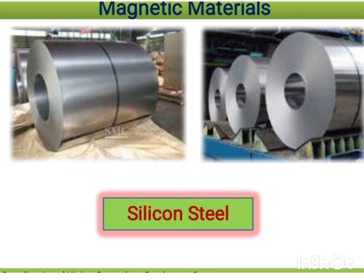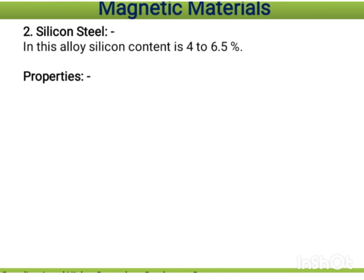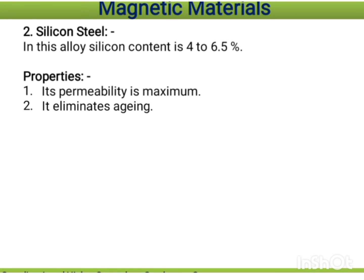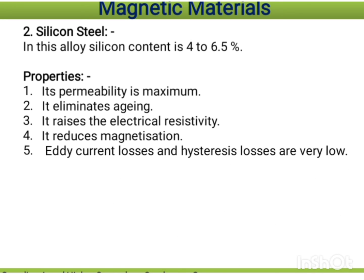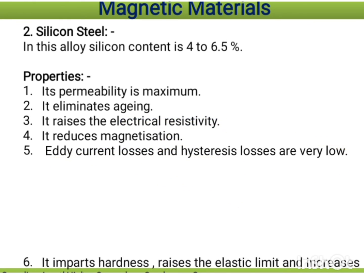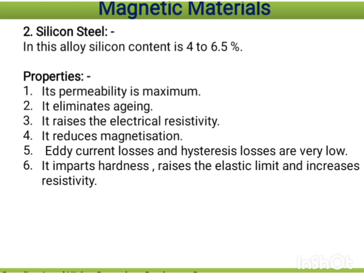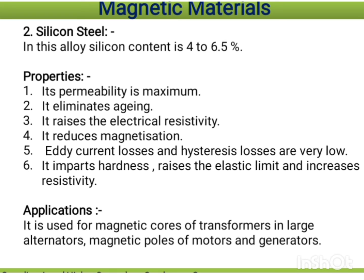Silicon steel has a silicon content of 4 to 6 percent. Its properties: permeability is maximum; it eliminates aging so the material remains stable over time; it raises electrical resistivity; it reduces magnetization to some extent; eddy current losses and hysteresis losses are very low due to increased resistivity; it imparts hardness and raises the elastic limit. Applications: used for magnetic cores of transformers, large alternators, and magnetic poles of motors and generators.